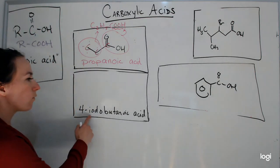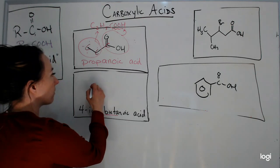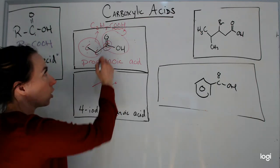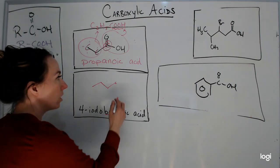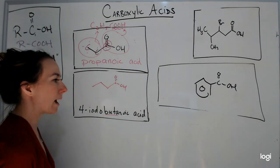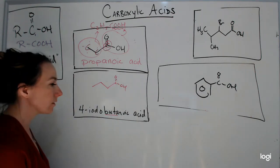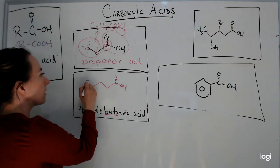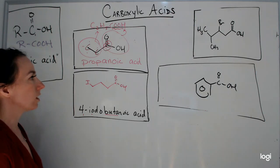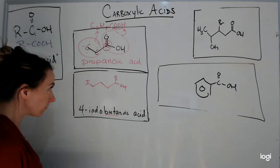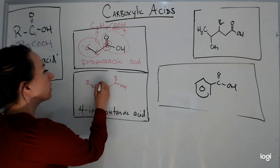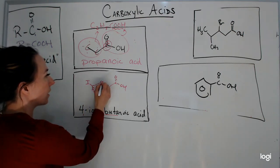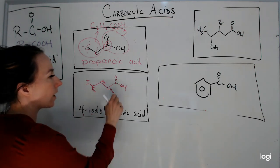Let's look at 4-iodobutanoic acid. 'But-' means four: one, two, three, four. Remember, the carboxylic acid carbon is still part of the parent chain — that's really important. So -oic acid gives us the C=O, OH from carbon one. Carbon one is the carboxylic acid end, which means carbon four — where the iodine is — is at the other end. So there's an iodine attached to carbon four. Each of the middle carbons gets the appropriate number of hydrogens to complete their bonds.